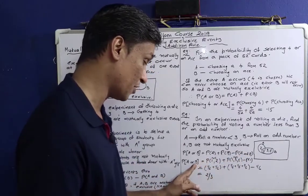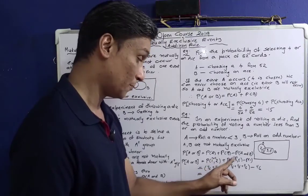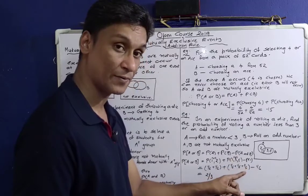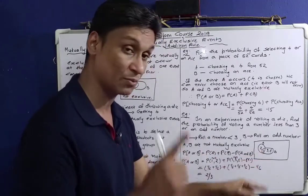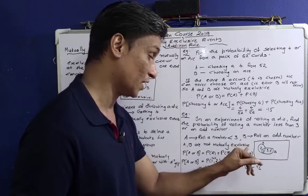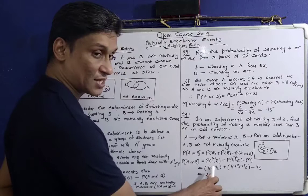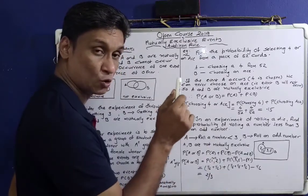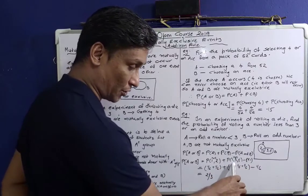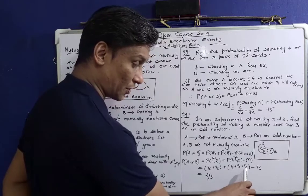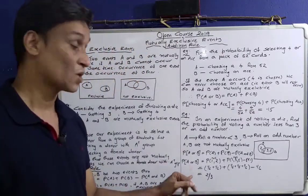P(A and B) corresponds to numbers that are both less than 3 and odd, which is just {1}. So P(A or B) = P(A) + P(B) − P(A and B). P(A) = 1/6 + 1/6 = 2/6. P(B) = 1/6 + 1/6 + 1/6 = 3/6. P(A and B) = P(1) = 1/6. Therefore, P(A or B) = 2/6 + 3/6 − 1/6 = 4/6 = 2/3. That is our answer using the Addition Rule.